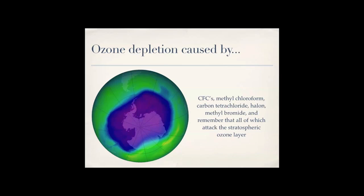Ozone depletion is caused by CFCs, methyl chloroform, carbon tetrachloride, halon, and methyl bromide — all of which attack the stratospheric ozone layer. Ozone in the troposphere, where weather happens and where we live, is not the same as the stratospheric ozone layer that forms the ozone hole, which is much higher up.